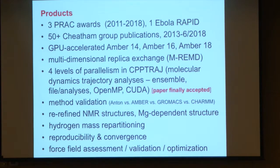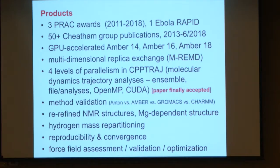We've been able to evaluate various methods. There have been concerns about whether there are differences in results from DE Shaw's Anton machine versus running NAMD, GROMACS, or AMBER, and we've been able to show that we can get reproducible results among these codes and understand where methodological differences have effect and where they don't.